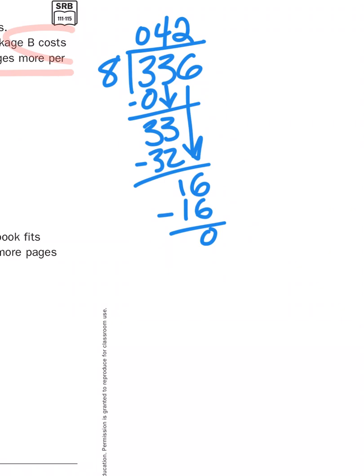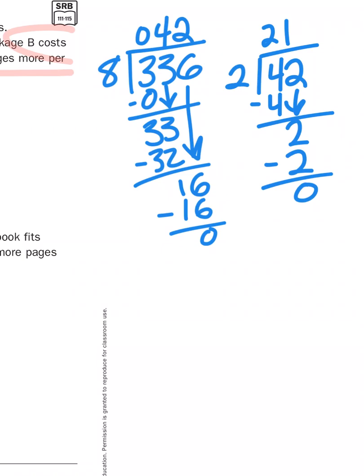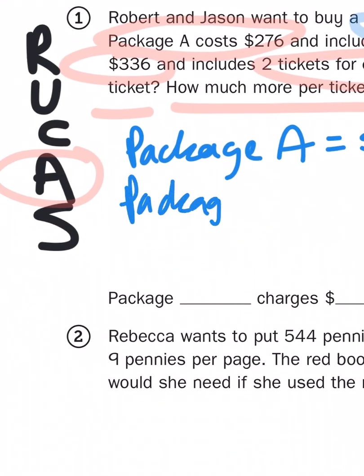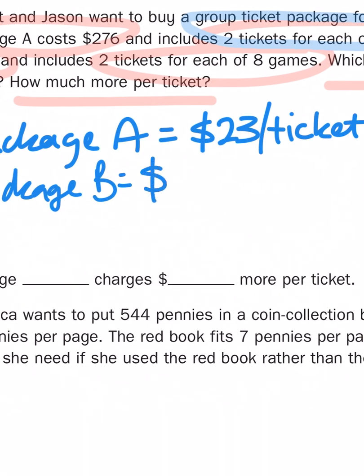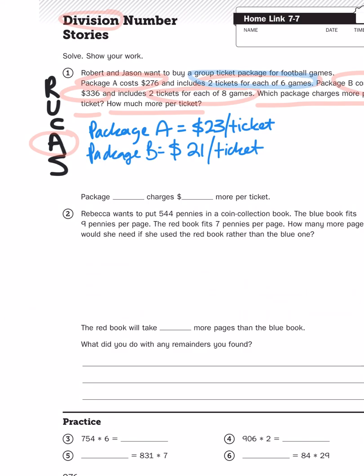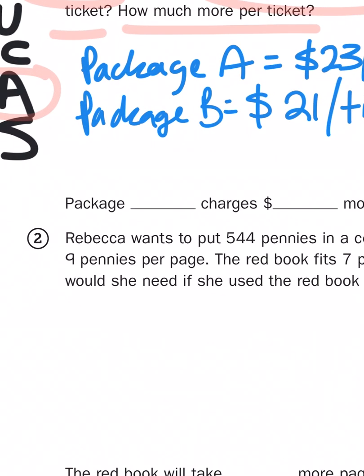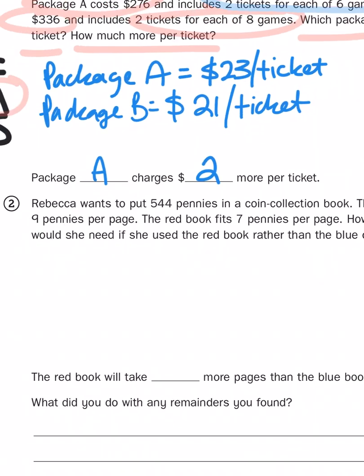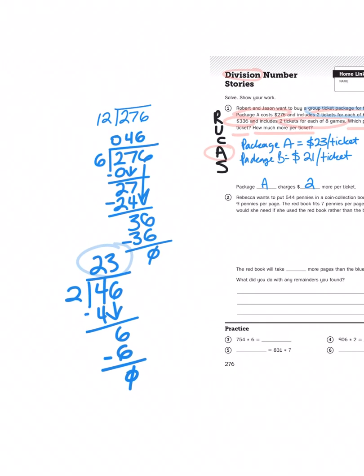So now what I have to do is divide 42 between the two gentlemen, Robert and Jason. And look at that. It's less expensive because 42 is just 21 times 2. So package B is $21. So to answer the question, which package charges more per ticket, package A charges the difference between 23 and 21, which is some mental math I'm sure you can do, which is $2 per ticket. All right? So, division number stories involving some division. Who would have guessed?